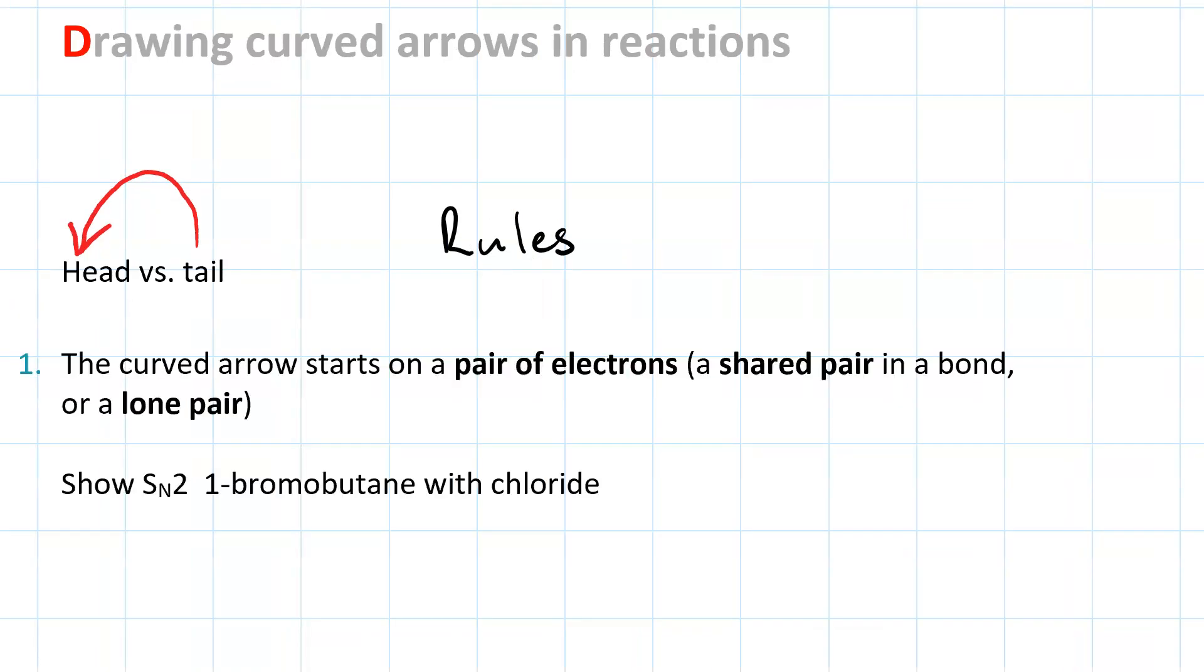Let's look at them. Rule number one is that the curved arrow has to start on a pair of electrons, either a shared pair that is in a bond, a sigma bond or a pi bond, or a lone pair, a non-bonding pair. A curved arrow cannot start on an atom. When we say start, we're talking about the tail of the curved arrow.